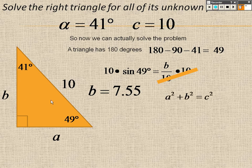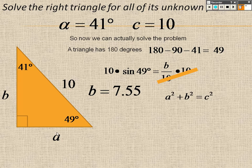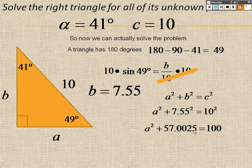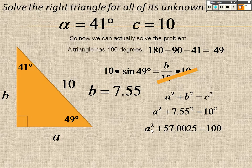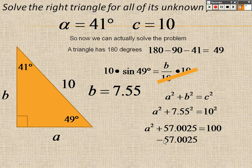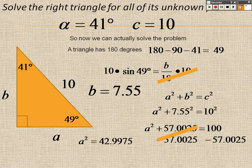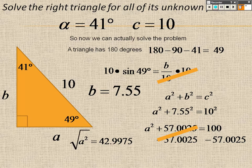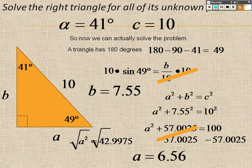Now I can use Pythagorean theorem again, except a is what I don't know. I know b is 7.55, and I know c is 10 squared. So it's actually a squared equals 57.0025, which equals 100. So to solve for a, because that's what I need, I try to get a by itself. So I have to minus by 57.0025 on both sides. So I get a squared equals 42.9975. So I square root both sides and get about 6.56. That's my answer.